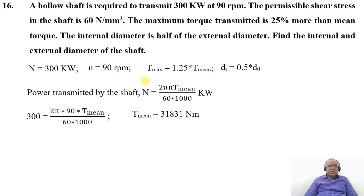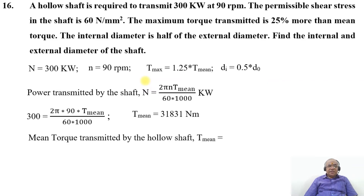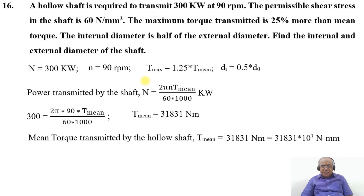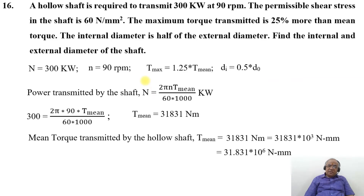Therefore, the T_mean value equals 31,831 Nm. The mean torque transmitted by the hollow shaft is T_mean = 31,831 Nm, which equals 31.831 × 10³ Nm, or on further simplification, 31.831 × 10⁶ Nmm.